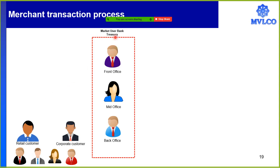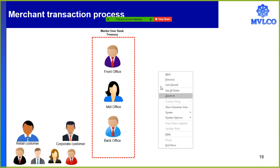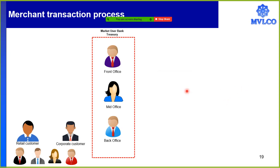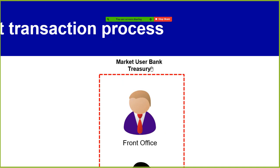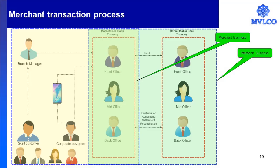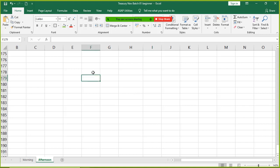I have two kinds of banks in my discussion. One bank is the market user bank. Now, what's a market user bank? In the banking circle, banks are classified into two types — not by regulation, only by practice. Sometimes I would have a market maker bank, and I would have a market user bank.